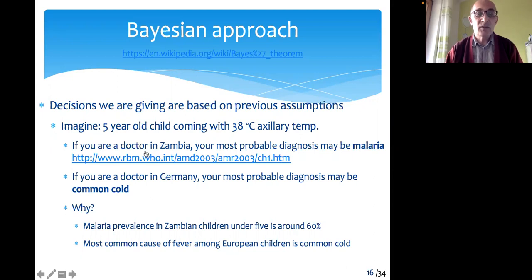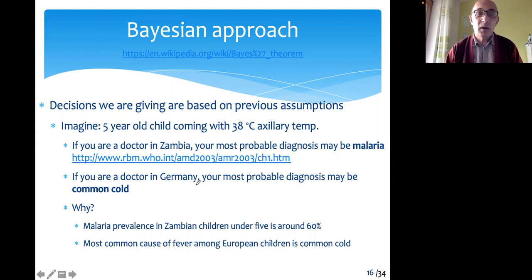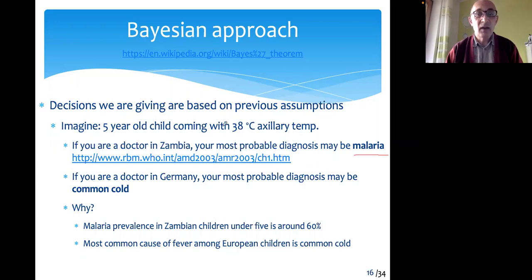I would like to explain this using a case. Imagine a five-year-old child coming to your practice with fever — high temperature. If you are living in Africa, you would probably guess that the probability of malaria would be high. But if you are working in Germany or another European country, a child with high temperature most probably has a common cold.